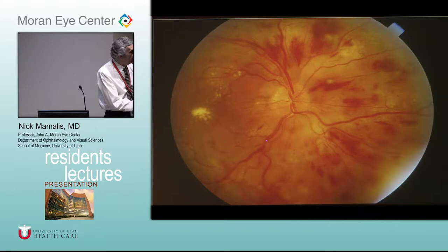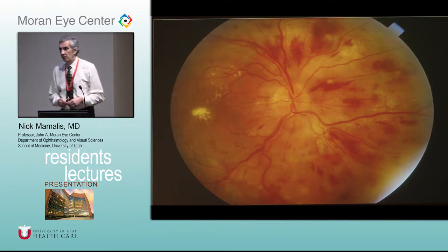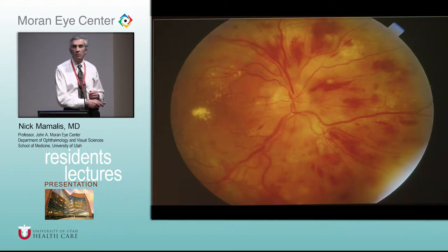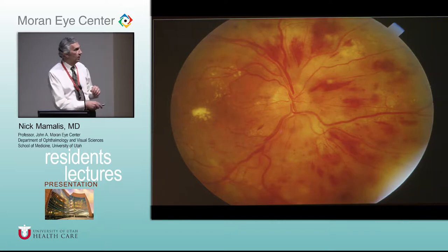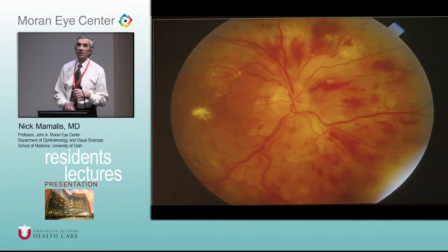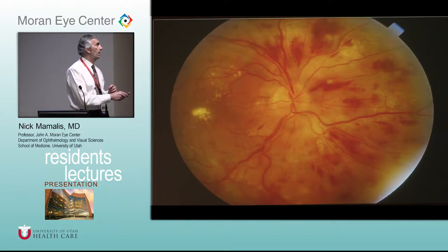Look at those little sausages — when the arterioles cross the vein you'll see that sausaging, called AV nicking. What causes that? You can almost see the arterial lining — people call this silver wiring or copper wiring. When you get arterial sclerosis the arterial wall thickens, the column of blood narrows, and as it crosses the sheath where the vein is, you get sausaging of the vein.